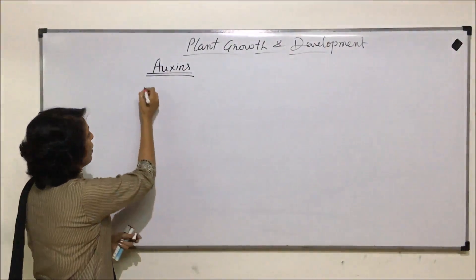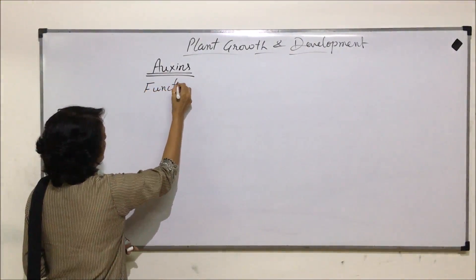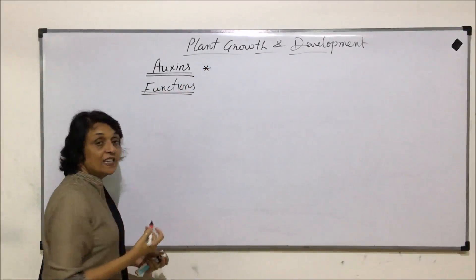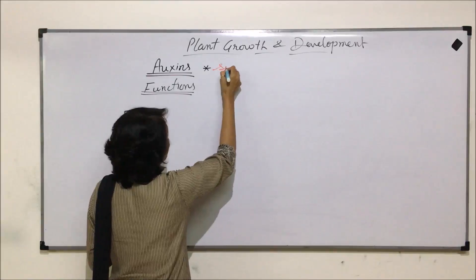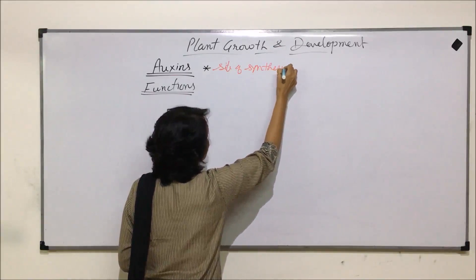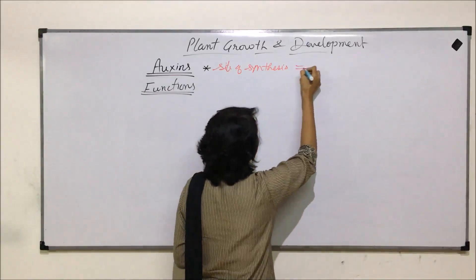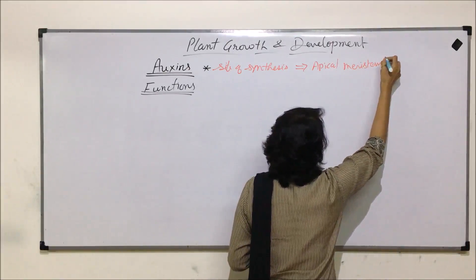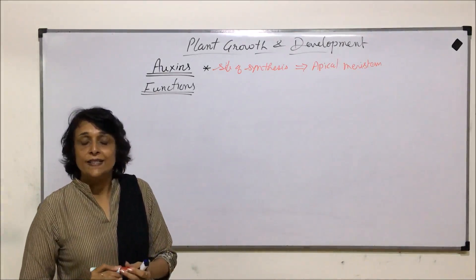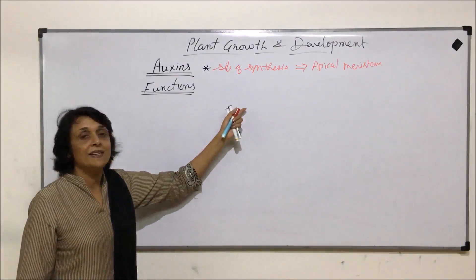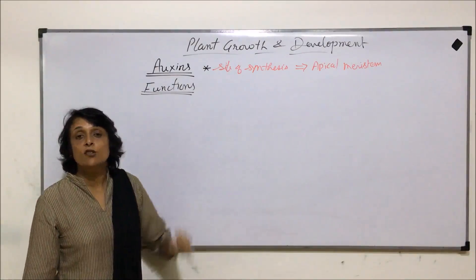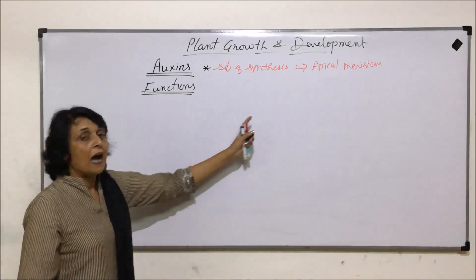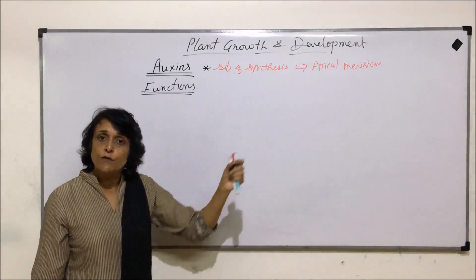Let us talk about the functions of auxins. Before we take up all the functions, let us write down the site where these auxins are synthesized. The site of synthesis of auxins is the apical meristem, also written as the apices of roots and stems — the tip of the root and stem where apical meristems are present. Now let us talk about the functions and how we can use auxins for various applications.